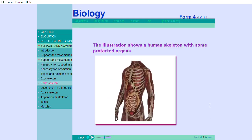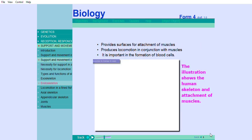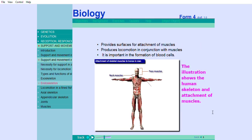The illustration shows a human skeleton with some protected organs. Provides surfaces for attachment of muscles. Produces locomotion in conjunction with muscles. And it is important in the formation of blood cells. The illustration shows the human skeleton and attachment of muscles.